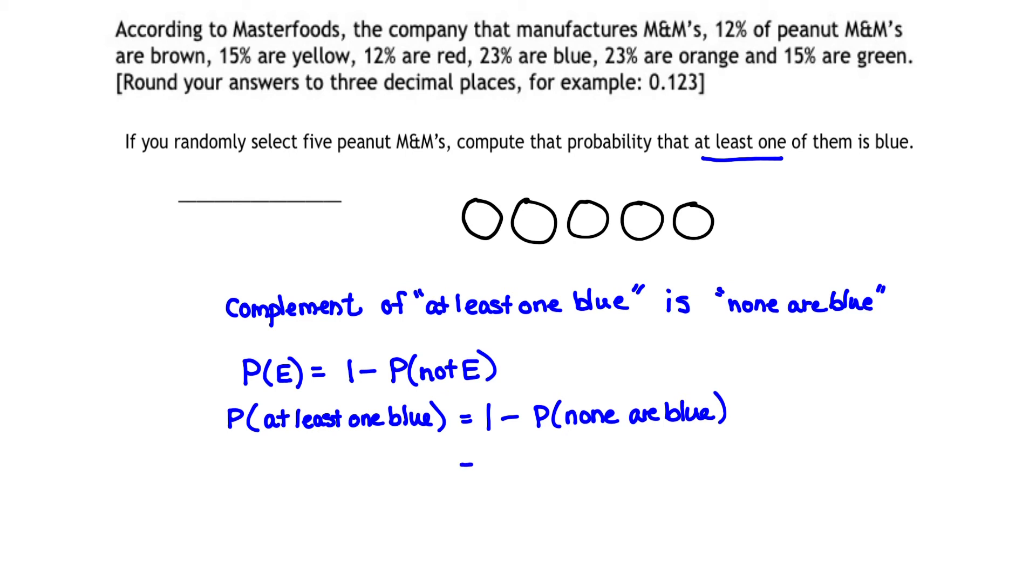And referring back to our previous problem, we've already calculated the probability that none of those five M&Ms are blue. We took 0.77 to the fifth power and we got 0.271. We just did this in the previous part.